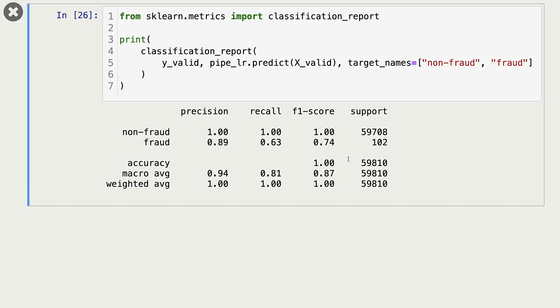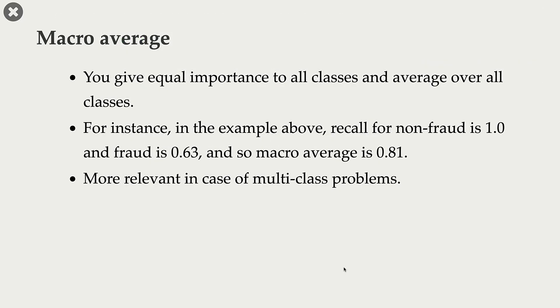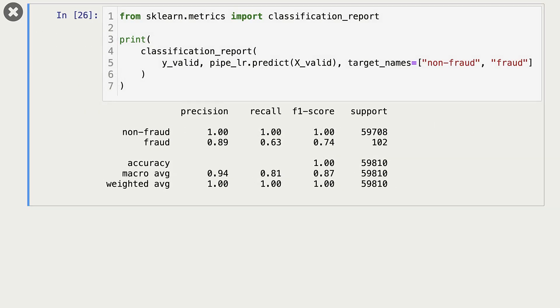We also see macro average and weighted average here. What do they represent? Macro average gives equal weight to different classes. In our particular case, fraud class was more important to us. And so we only looked at precision, recall, and F1 score for fraud class. But in some cases, both classes are important. Or if you have multi-class classification problem, then you have different number of examples for each class. But precision, recall, and F1 score for all classes is important to you. In that case, you would go with macro average. You want to give equal importance to all classes.